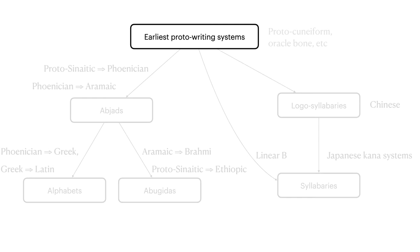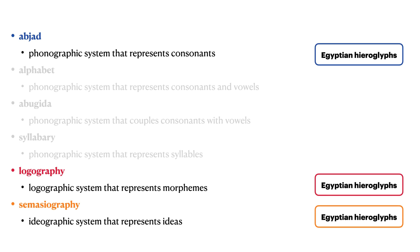Ancient Egyptian is one of the earliest writing systems. We see here various types of writing systems and the aspects of Egyptian hieroglyphics we've just discussed. Ancient Egyptian hieroglyphs can be used as an abjad — a phonographic system that represents consonants. Other Egyptian symbols were used as logographs, where each symbol represents a morpheme. And other hieroglyphs were semi-semasiographic in nature, or ideographic symbols representing ideas. This is a relatively small usage, but it was there.